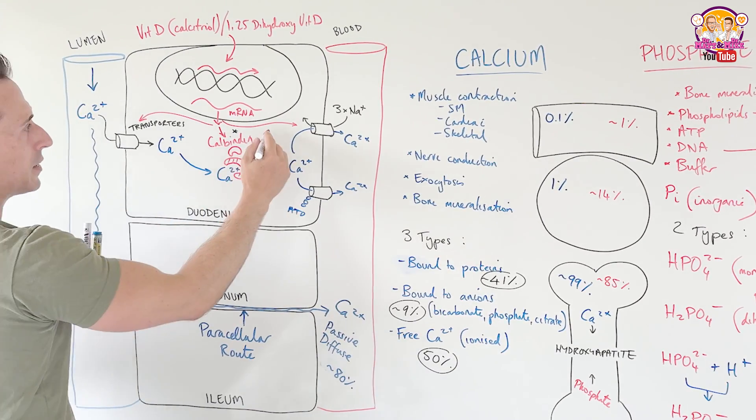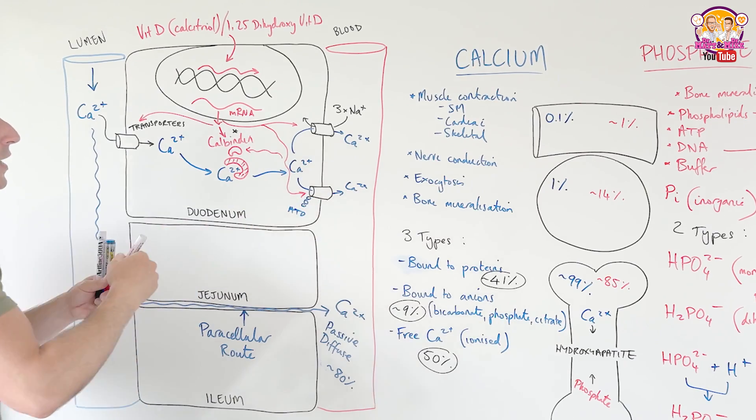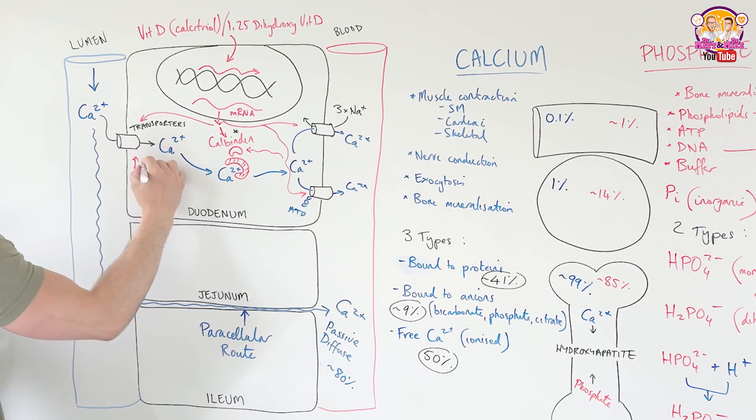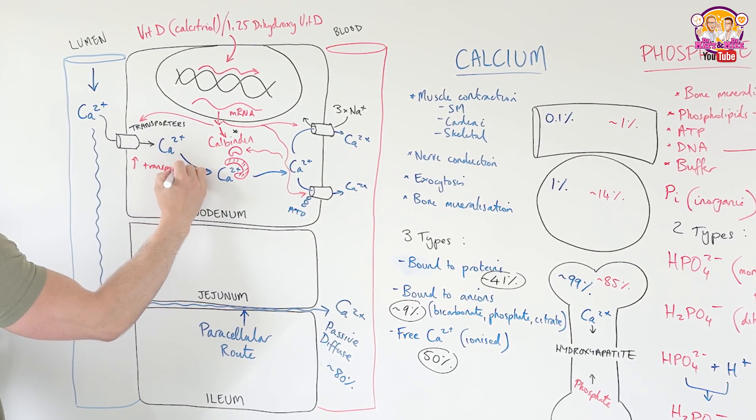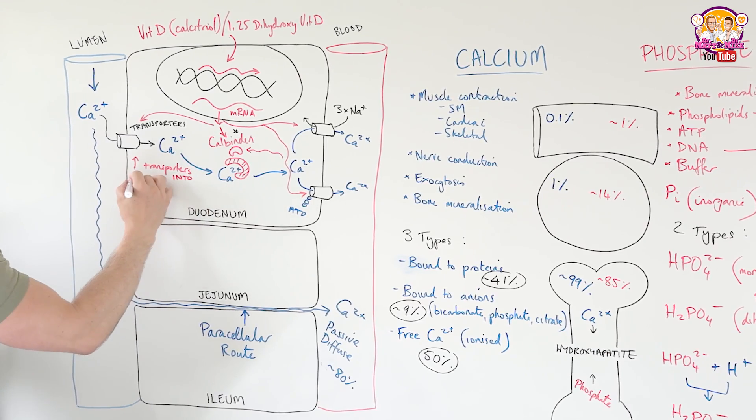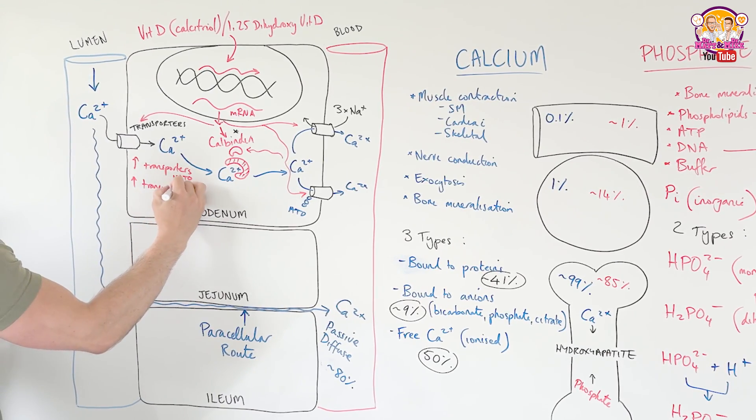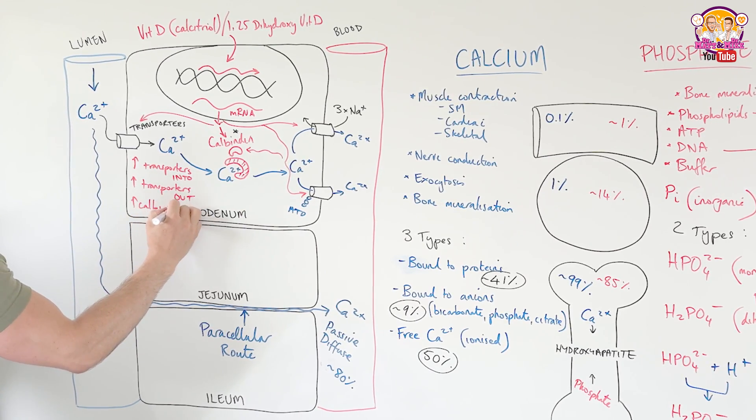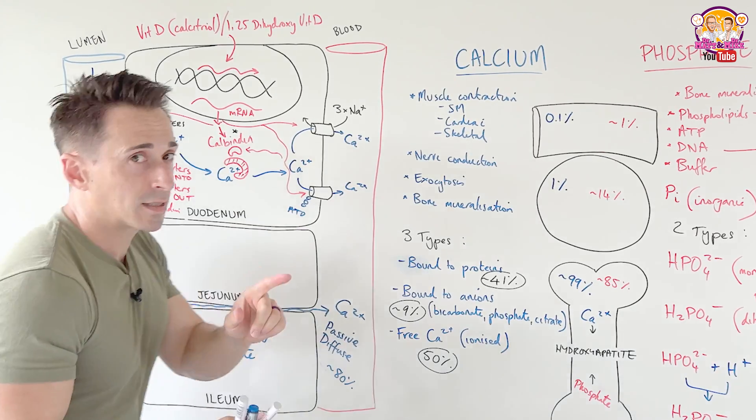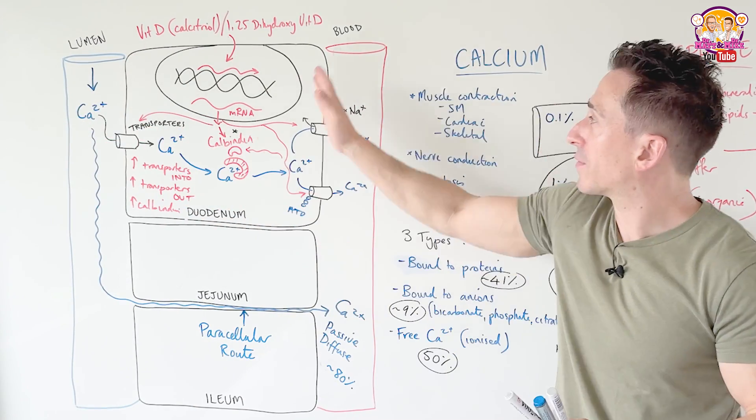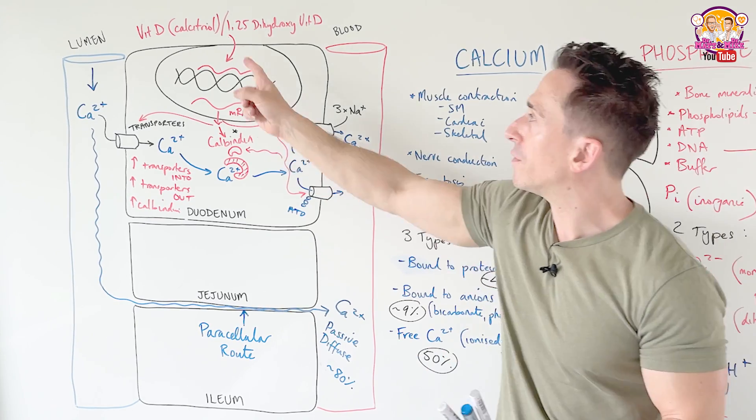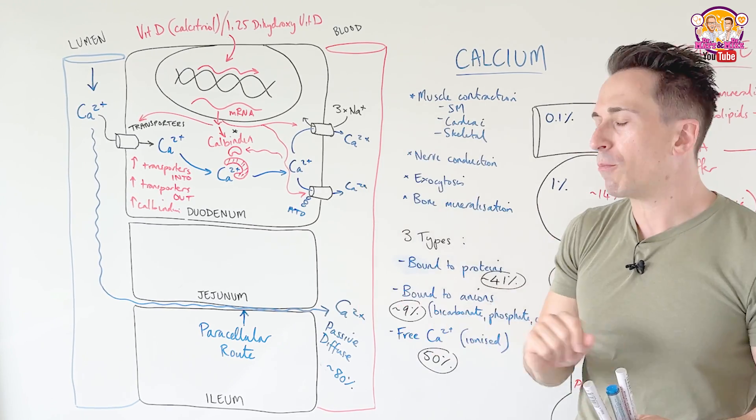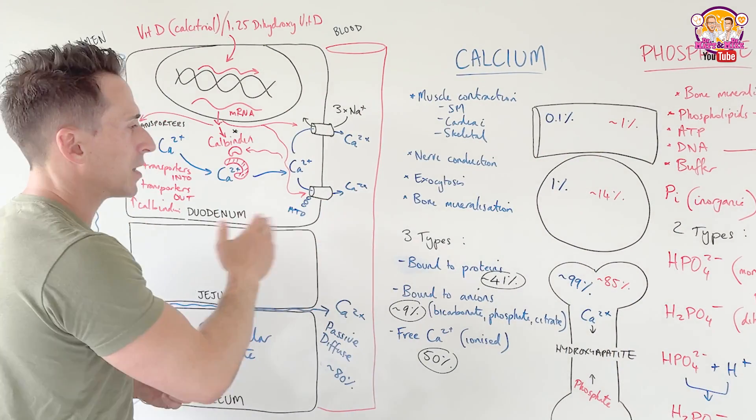So as you can see, what it does is that vitamin D does three things in the enterocyte: increases transporters into the cell, increases transporters out of the cell, and also increases calbindin. All of these things, this is an important point, all of these things increase the amount of calcium in our blood. Which means one of the roles of vitamin D is to increase blood calcium levels. Perfect. Now I've got calcium in our blood. What happens to the calcium that's in our blood? Let's take a look.